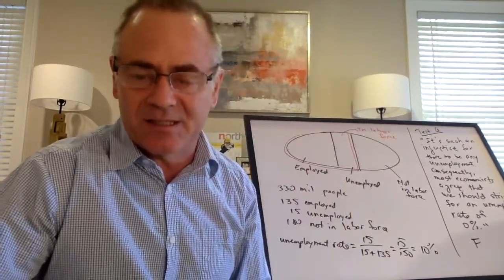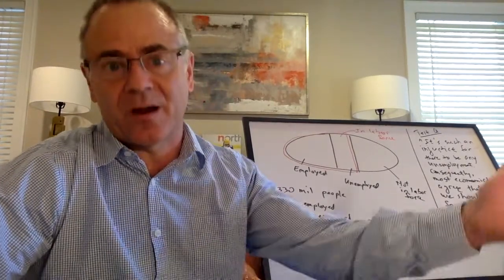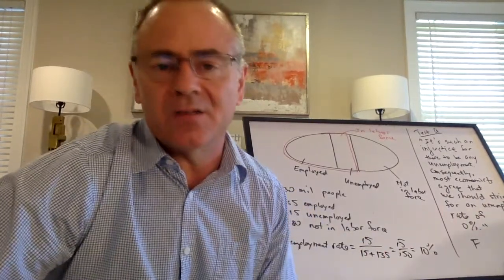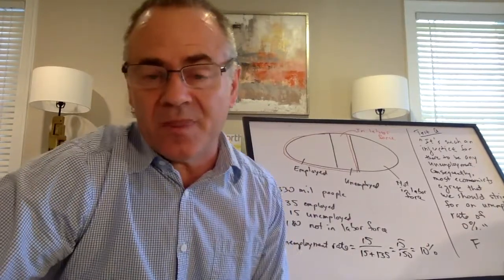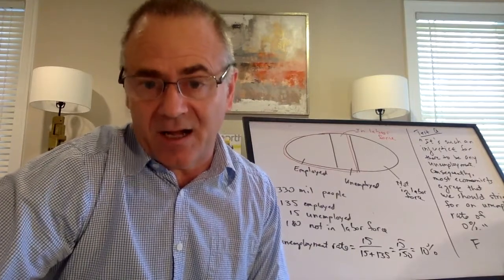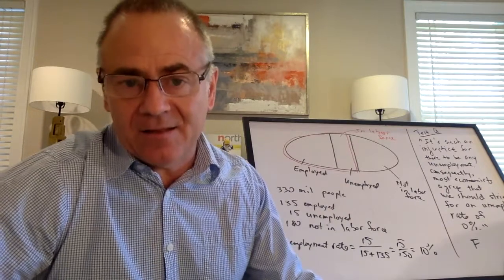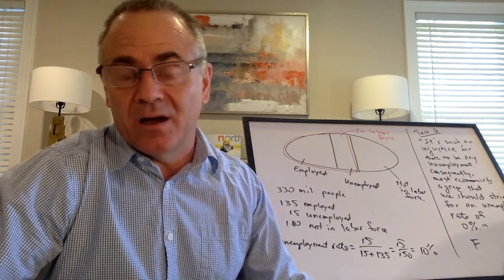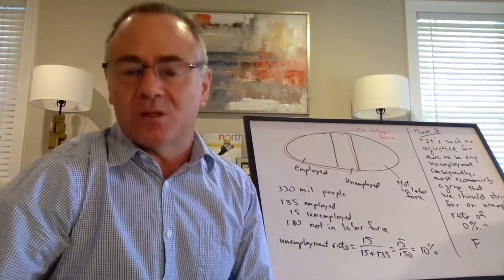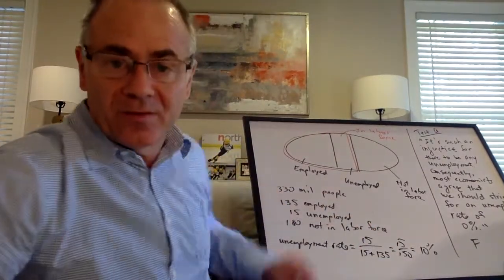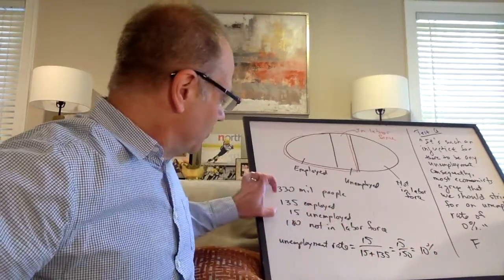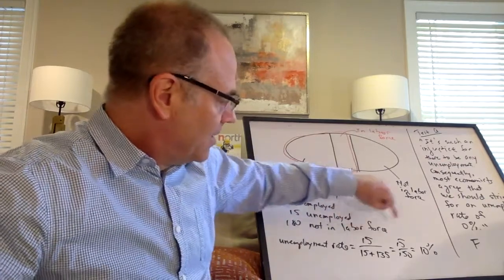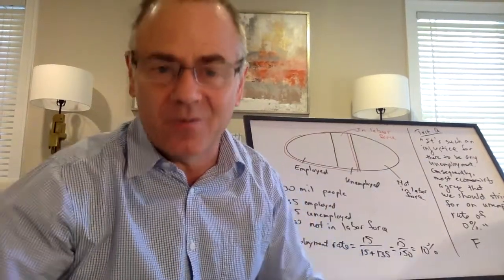The Bureau of Labor Statistics counts people from surveys and extrapolates to the population at large. In the U.S. in 2020, there were about 330 million people. Let's say 135 million have a job, 180 million are not in the labor force, and 15 million are unemployed — in the labor force but looking for work. The unemployment rate is 15 divided by 15 plus 135, which is 15 divided by 150, giving 10%.